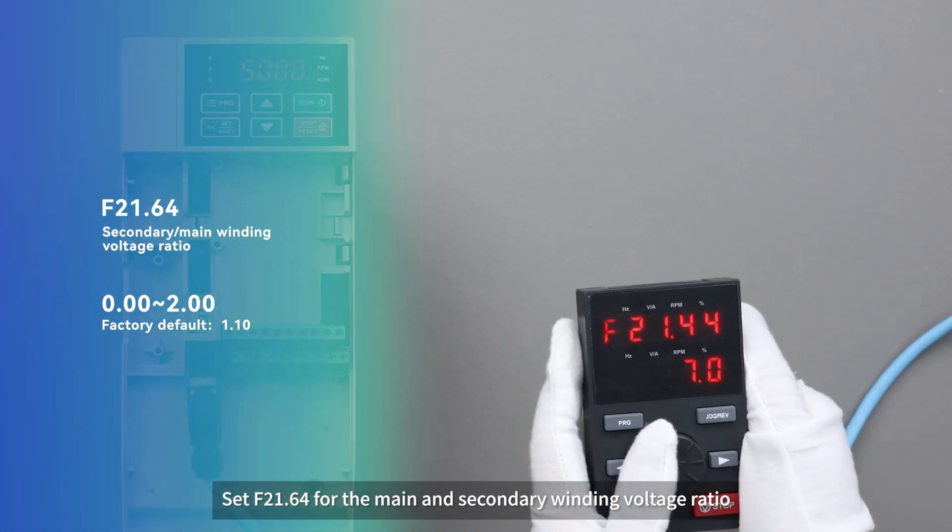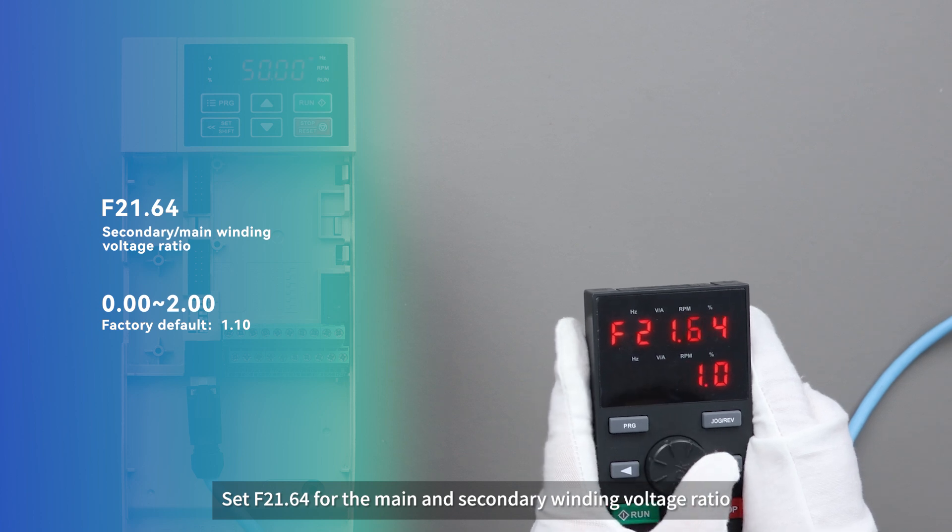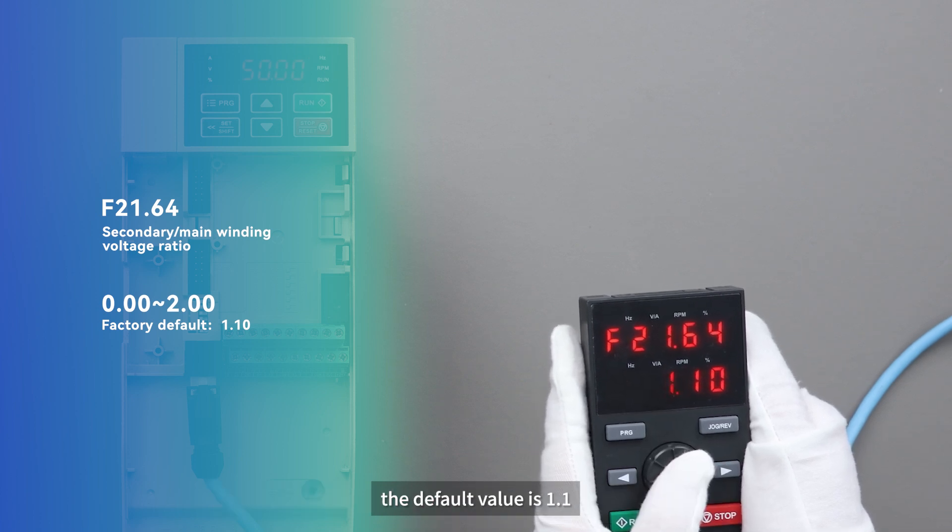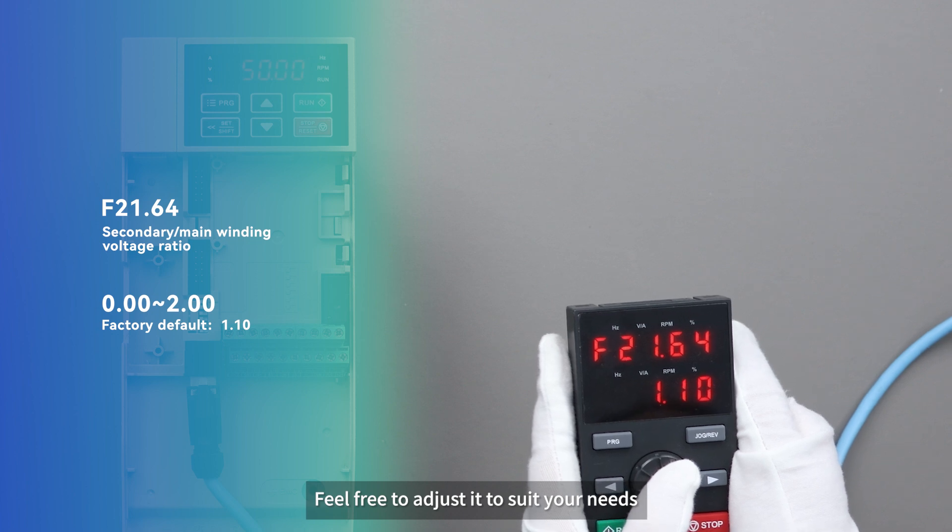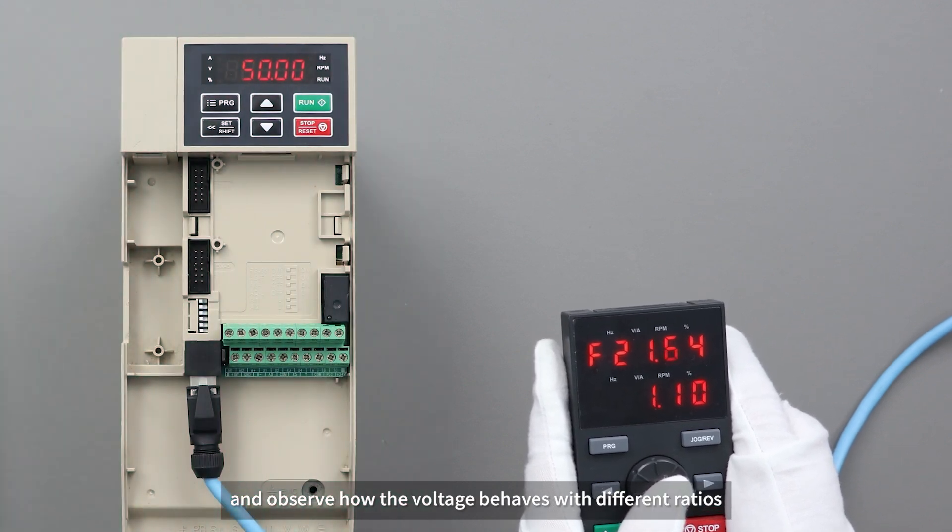Set F21.64 for the main and secondary winding voltage ratio, the default value is 1.1. Feel free to adjust it to suit your needs, and observe how the voltage behaves with different ratios.